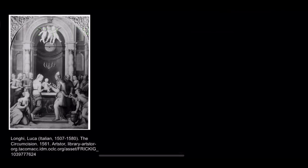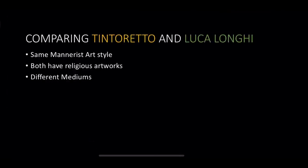The painting above is called The Circumcision. Tintoretto and Luca Longhi have many things in common pertaining to their artwork. Both have the same Mannerist art style, such as the figures' poses and use of light to create space, giving off a strong sense. Both Tintoretto and Luca Longhi have many religious artworks. They have different mediums, and Luca Longhi is more of a portrait painter than Tintoretto. Overall, both are well-known artists of the 16th century and the Late Renaissance Mannerism movement.